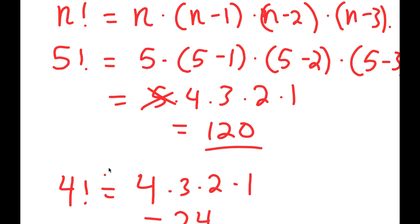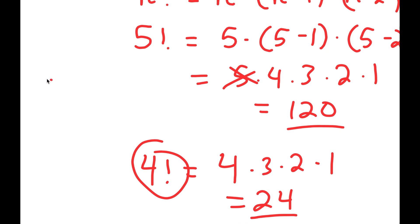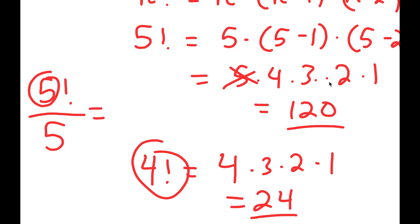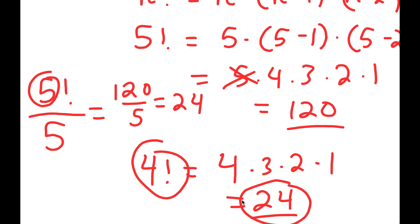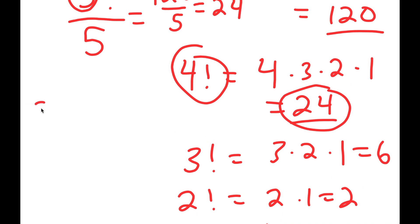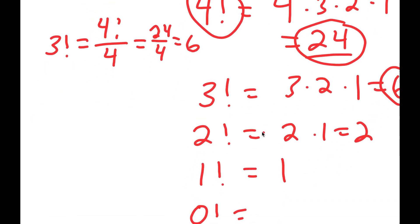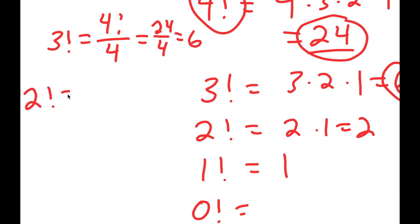There is actually a pattern. For 4 factorial and 5 factorial — how do we use 5 factorial to get down to 4 factorial? Well, 4 factorial is the same thing as 5 factorial divided by 5. 5 factorial is 120 and 120 over 5 is equal to 24, which is the value of 4 factorial. We can use the same pattern: 3 factorial equals 4 factorial over 4, which is 24 over 4, which equals 6.